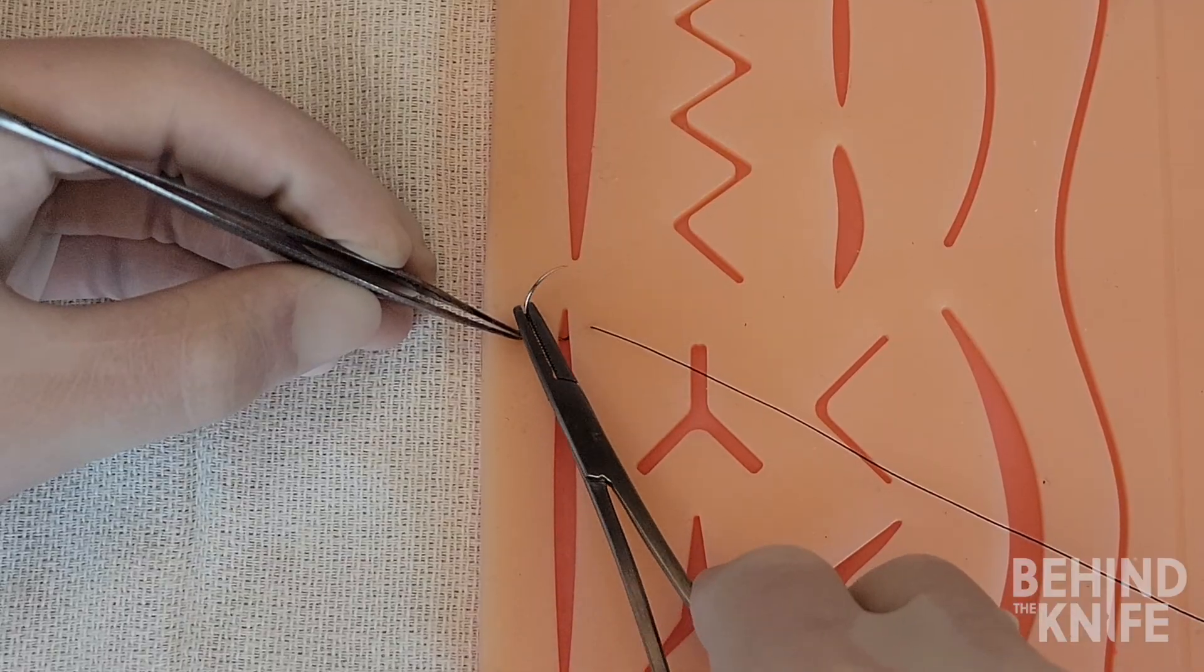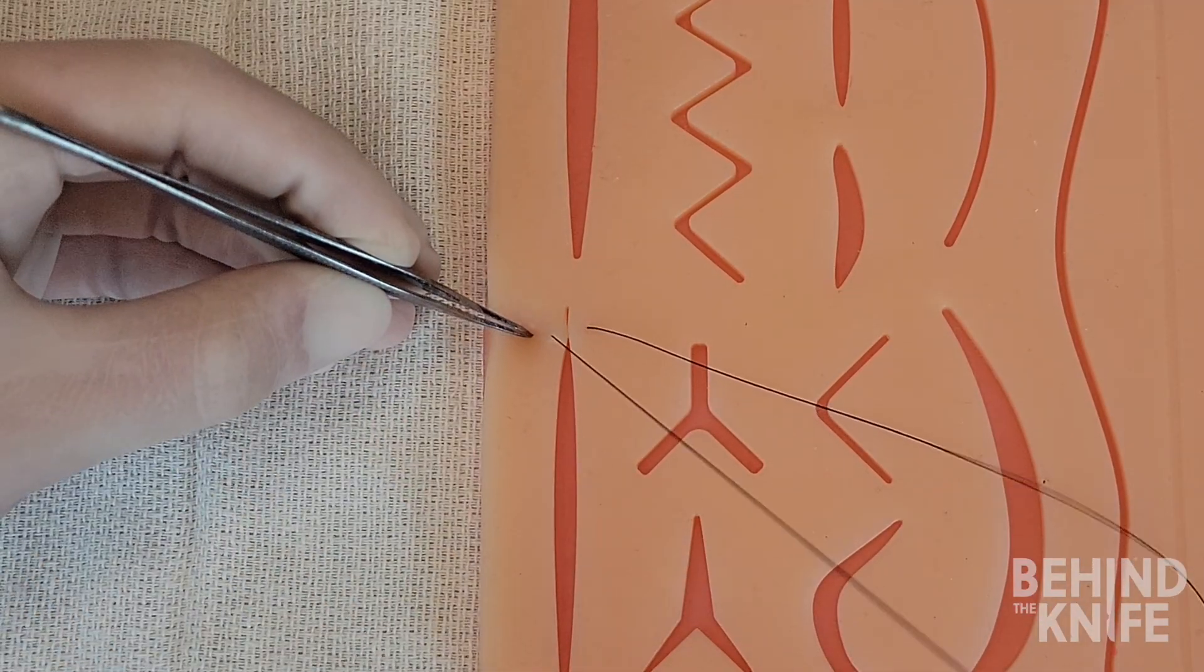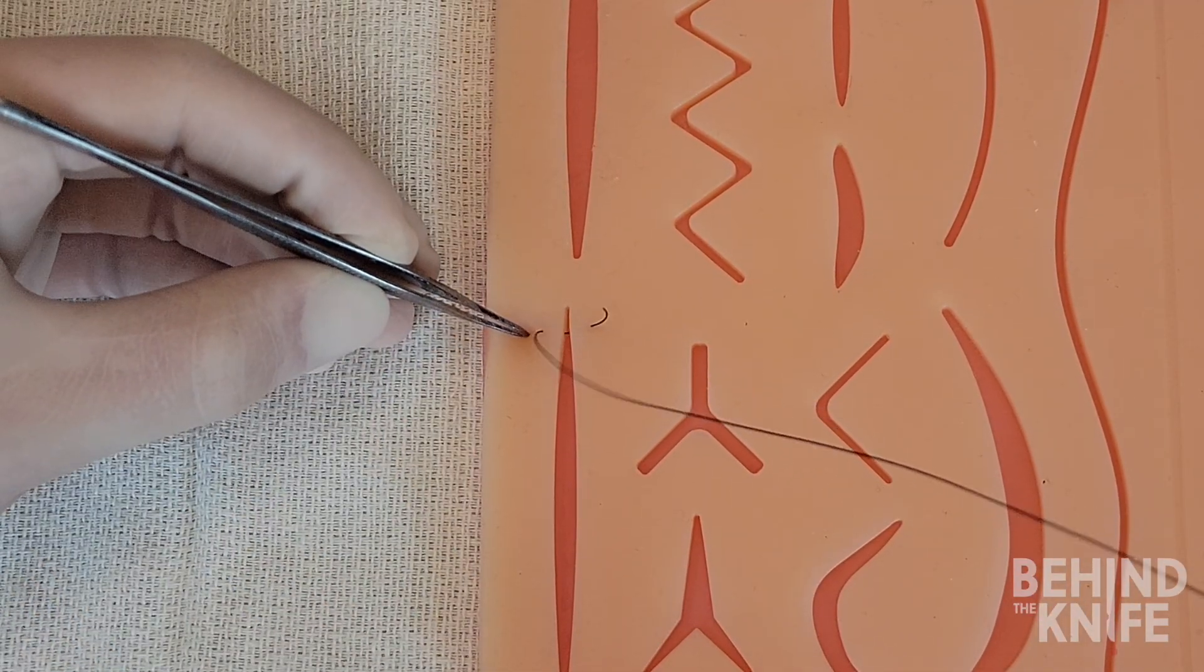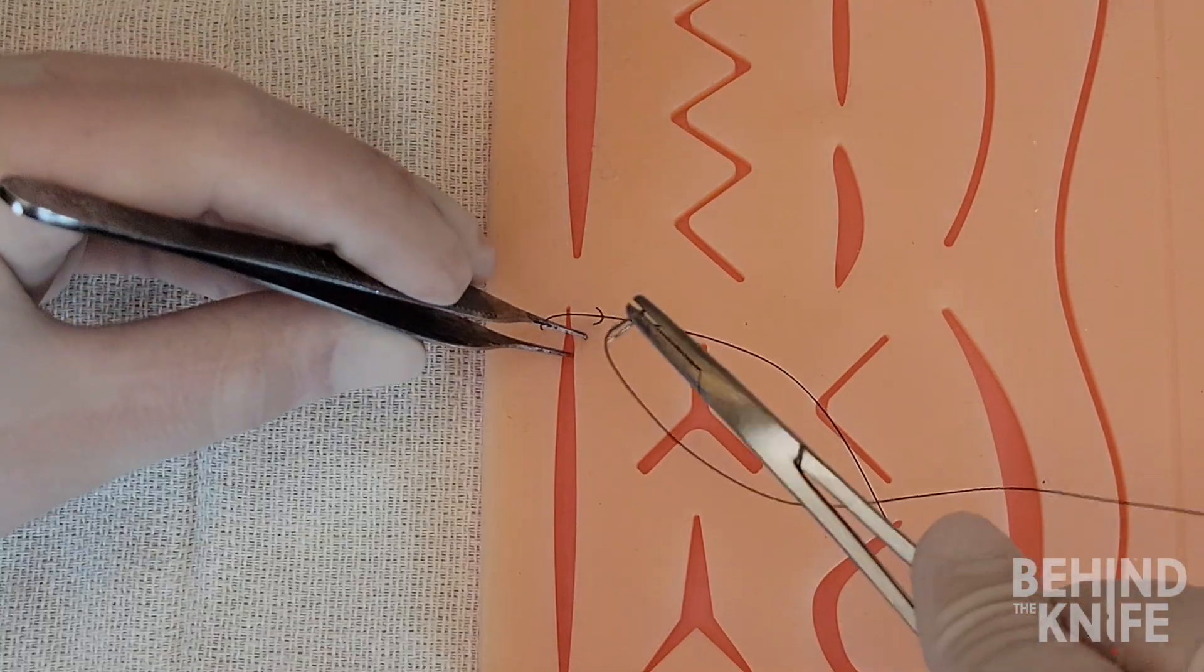Now unlike the horizontal mattress where you enter backhand at this point, we are going to come back across the wound to the side we started on and repeat the same throw.